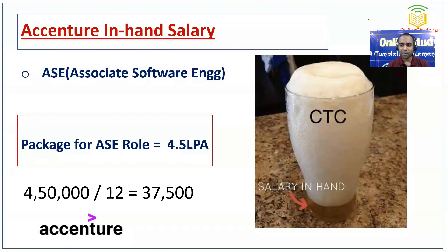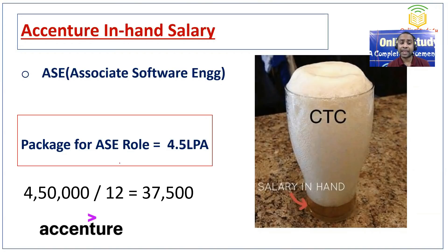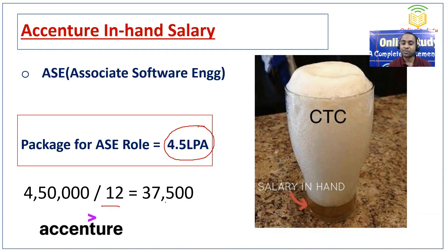Hello everyone, welcome to On and Study for You, a complete placement solution. In this video I am going to discuss Accenture in-hand salary. The package for the ASE role — Associate Software Engineer — in Accenture is 4.5 LPA, and if you divide by 12 you should be getting 37,500 rupees.